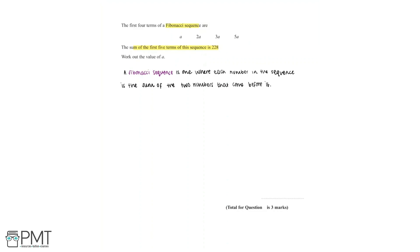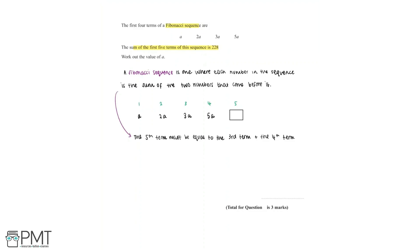We can use this definition of a Fibonacci sequence to find the fifth term. Since each number is the sum of the two numbers that come before it, the fifth term must be equal to the third term plus the fourth term. The third and fourth terms are 3a and 5a, so the fifth term must be equal to 3a plus 5a, which is equal to 8a.